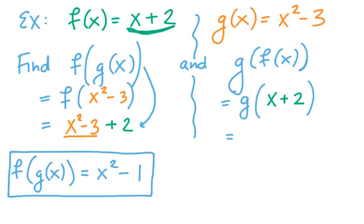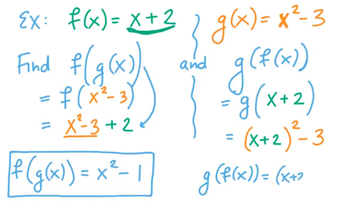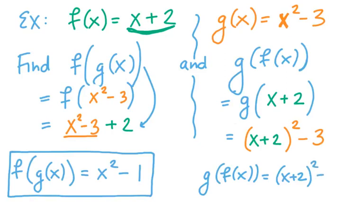So function g says take your input. My input is x + 2. Then it tells me to square the input. That's what x squared means, the input squared. And then don't forget to subtract 3. So I don't think I'm going to do any further cleanup there. I'm not going to bother foiling out x + 2. So let's leave g(f(x)) as (x + 2)² - 3.